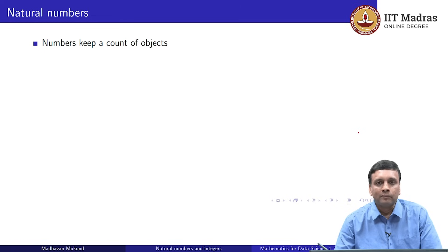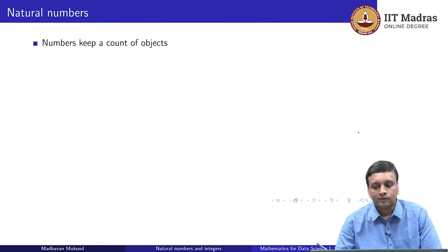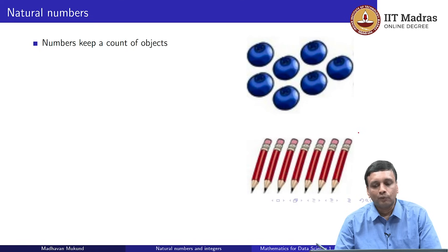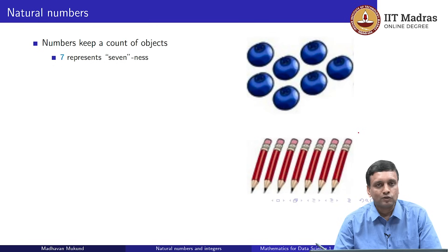As you probably remember from when you first came across numbers in school, we use numbers mainly for counting. For instance, if we see seven balls and seven pencils, we need to know that these are the same number of things, and for this we use the number seven. Seven represents what is common to these two objects — that there are seven balls and seven pencils. Seven is an abstract concept in that sense and it refers to a quantity.